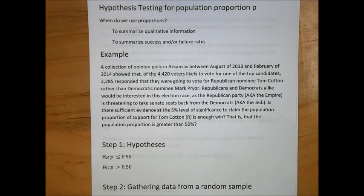As the Republican Party is threatening to take Senate seats back from the Democrats. Is there sufficient evidence at the 5% level of significance to claim the population proportion of support for Tom Cotton is enough to win? That is, that the population proportion is greater than 50%?